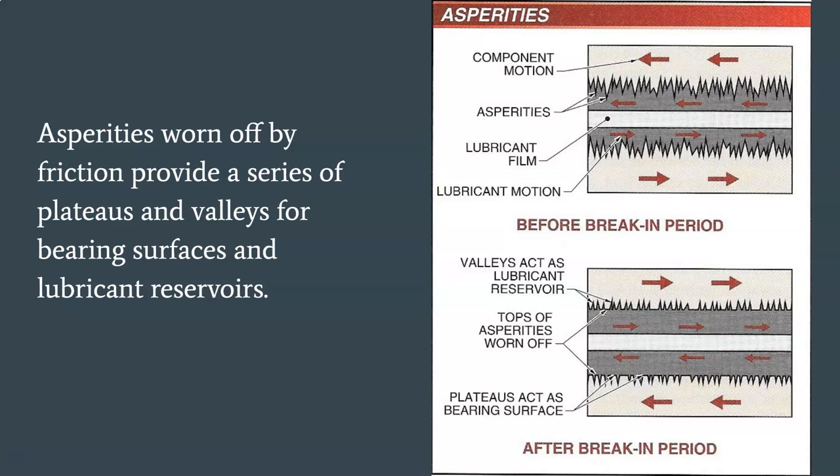All bearing surfaces in an internal combustion engine are susceptible to friction. An integrally machined aluminum bearing surface of a connecting rod, crankcase cover, sump, or cylinder block has a smooth, shiny surface. However, viewing this surface under a microscope reveals asperities — tiny projections from the machining process which produce surface roughness or unevenness. Under a microscope, asperities resemble a series of mountain peaks and valleys. Asperities worn off by friction provide a series of plateaus and valleys for bearing surfaces and lubricant reservoirs.